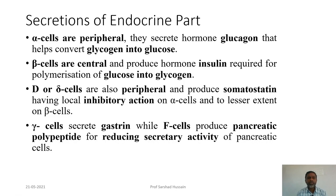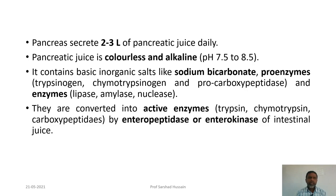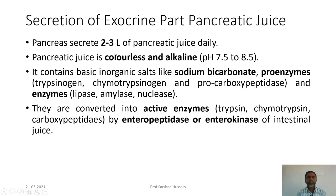Gamma cells secrete gastrin, while F cells produce pancreatic polypeptide, which is required for reducing the secretory activity of pancreatic cells. The pancreas secretes about two to three liters of pancreatic juice daily, which is the product of the exocrine part — the alveoli.